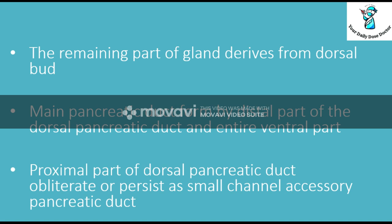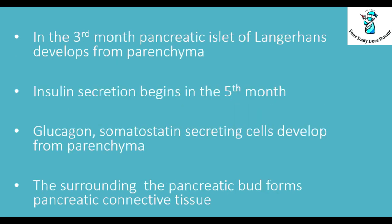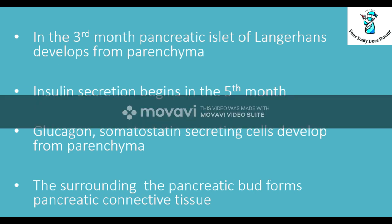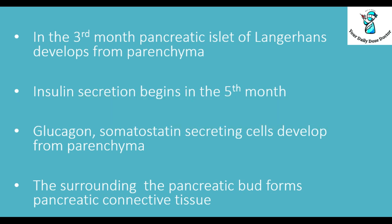During the third month of fetal life, the pancreatic islets of Langerhans develop from the parenchyma. Insulin secretion begins at the fifth month, and the glucagon and somatostatin secreting cells also develop from the parenchyma. The surrounding tissue of the pancreatic buds forms the pancreatic connective tissues.